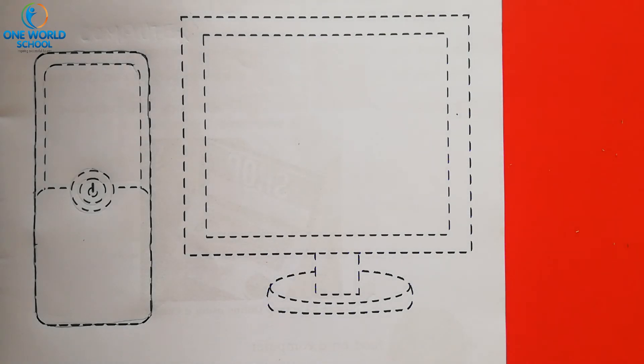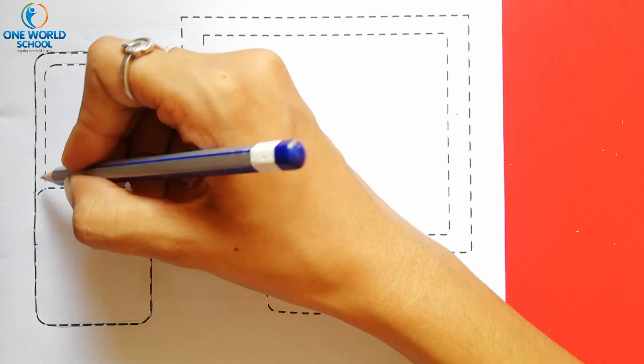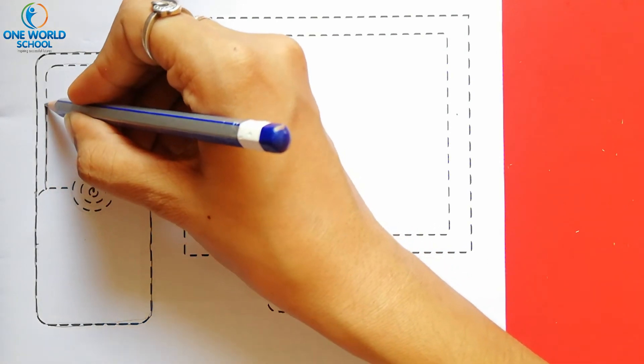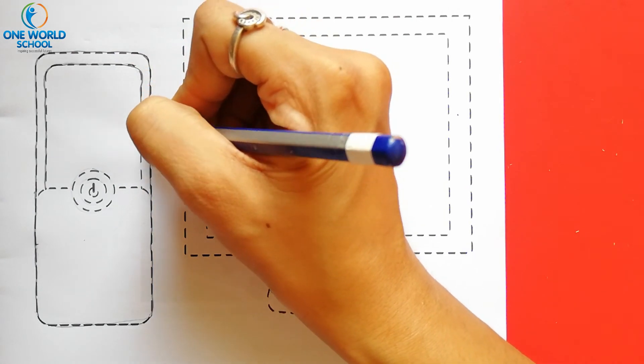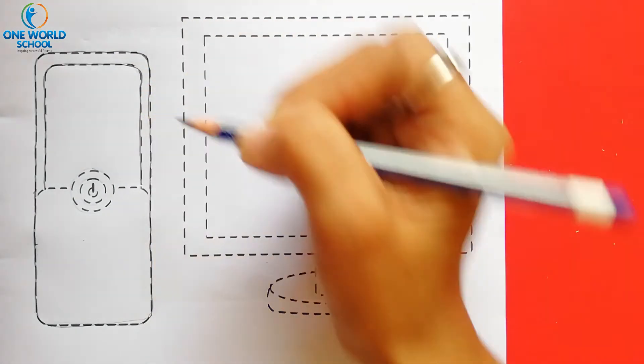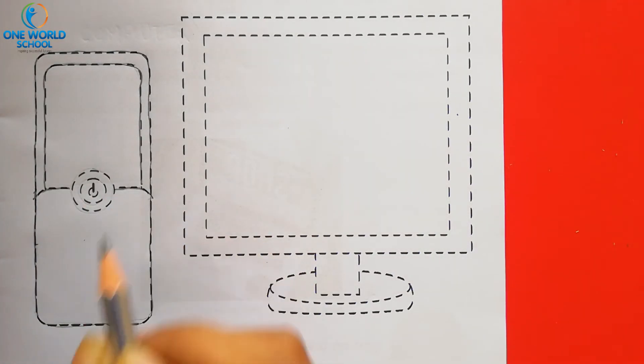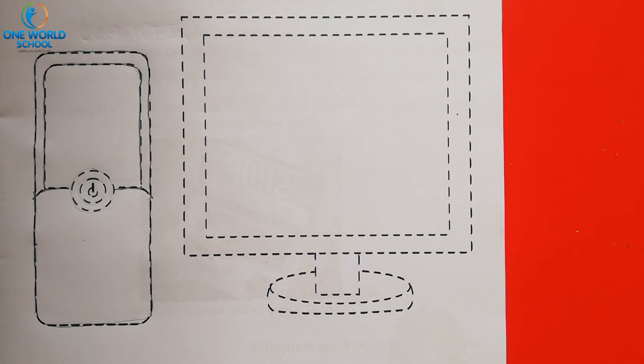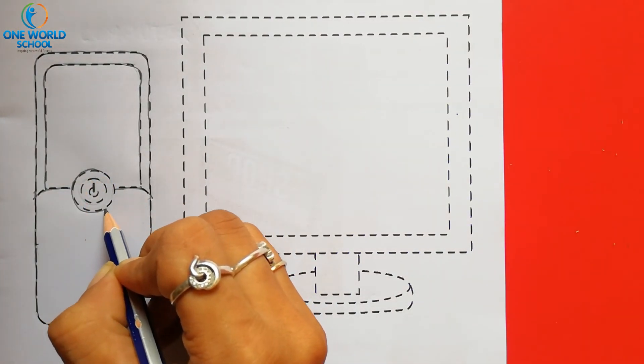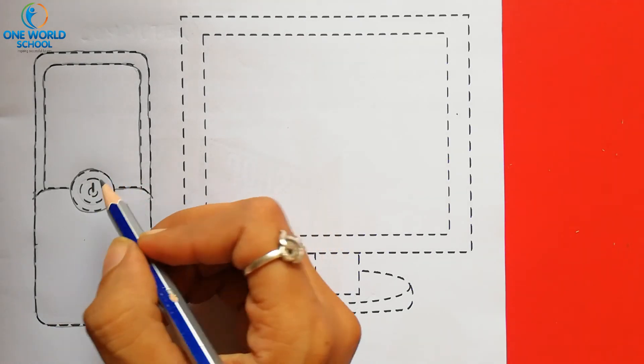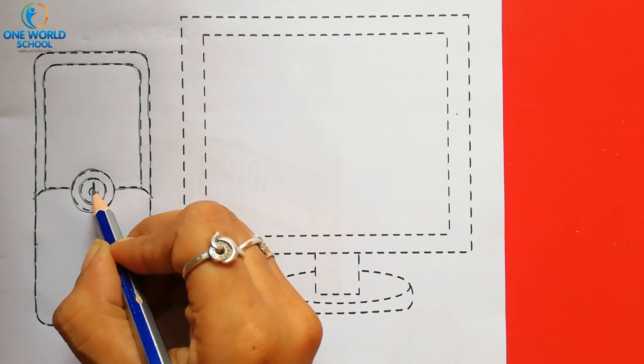Now the turn about next one. Join the dots like this. Okay. यह जो dots है. उसके ऊपर आपको carefully join करना है. Then after slipping line. यहां से. ऐसे. And then after power button.